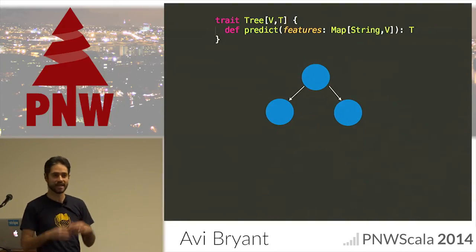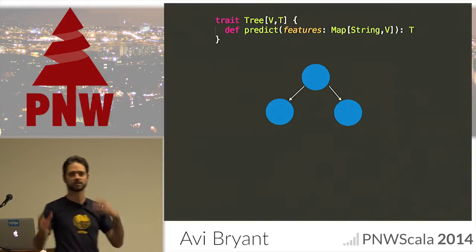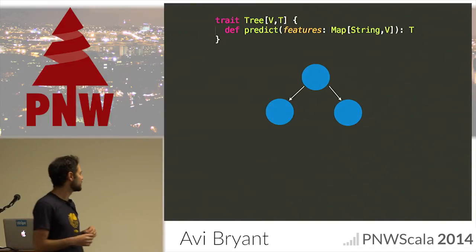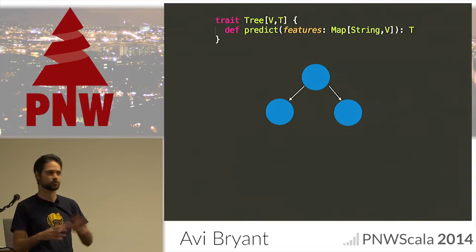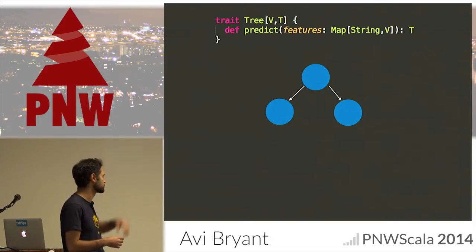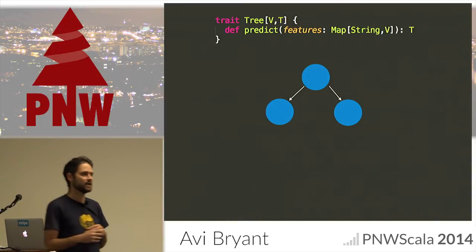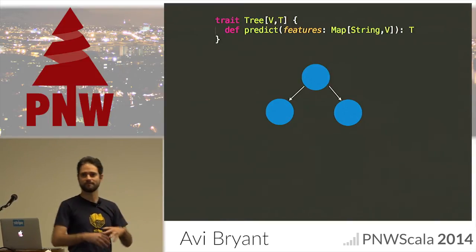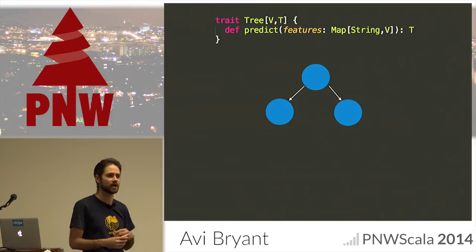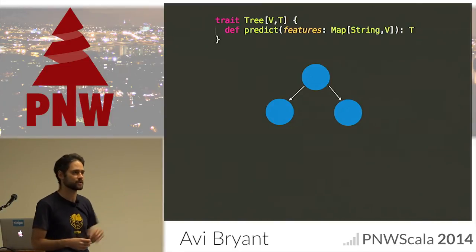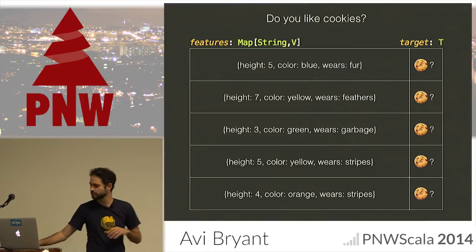— from strings, which represent names of features (people also call these properties or attributes) — to values. Generically, we're going to think of the value as being some type V. And you get back a prediction based on these features; based on these things you're telling me about, I'm going to give you back this prediction, which is of type T.